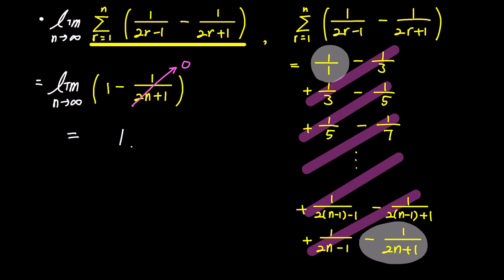Ultimately, the infinite sum becomes 1. By utilizing the characteristics of telescoping series, we have determined the sum of this infinite sequence. Does this mean that all telescoping series follow this same pattern of terms cancelling each other out?